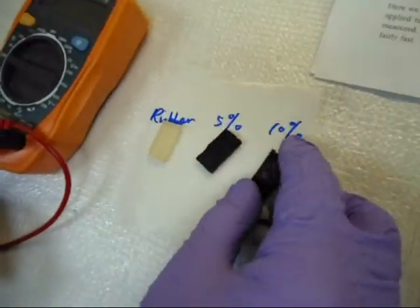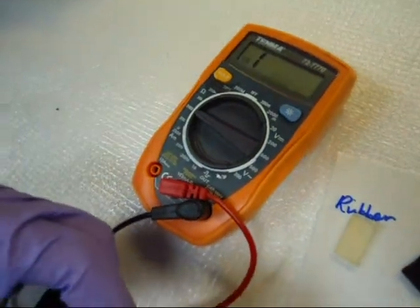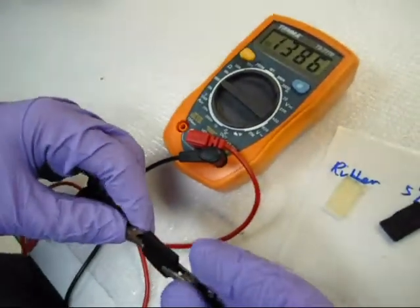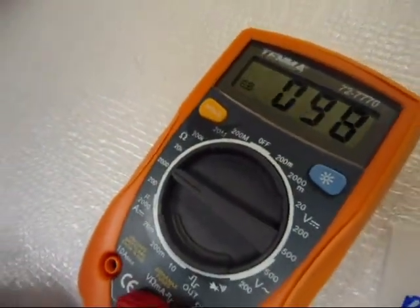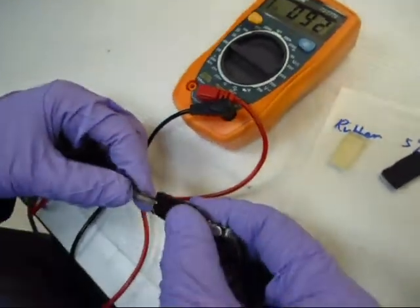By further adding more graphite into the rubber, we are supposed to see its conductivity further increasing. Now, its resistance is only 100 ohms, which is much smaller than the 5 weight percent sample.